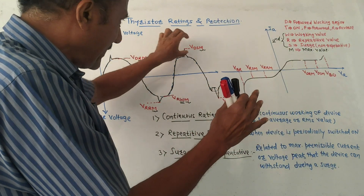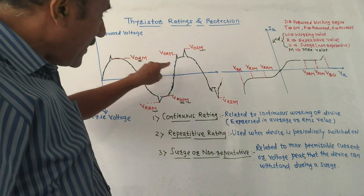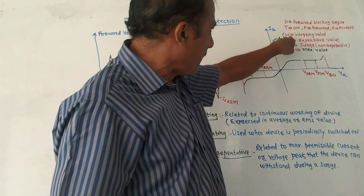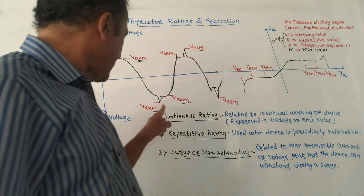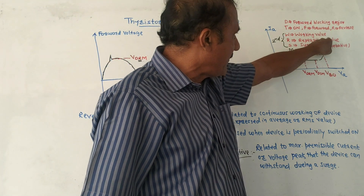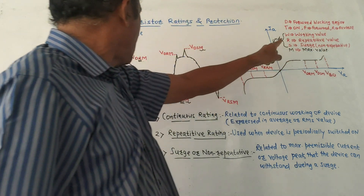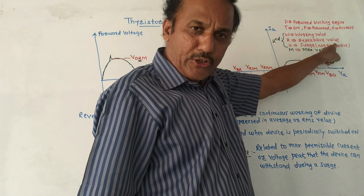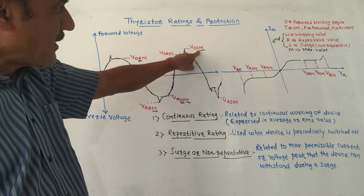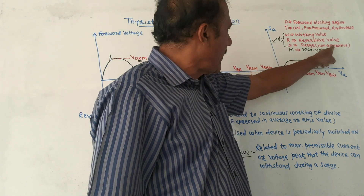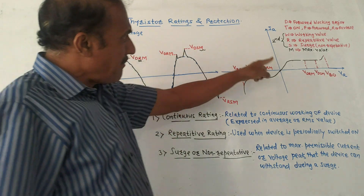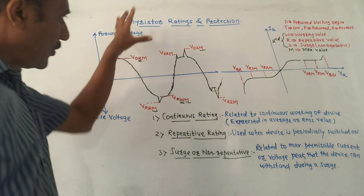We are talking about the different suffixes used in these notations. Regarding the second suffix: if it is W, it indicates working value; if it is R, it indicates repetitive value; if it is S, it indicates surge value, that is non-repetitive value. The third suffix M almost everywhere represents maximum value or peak value.